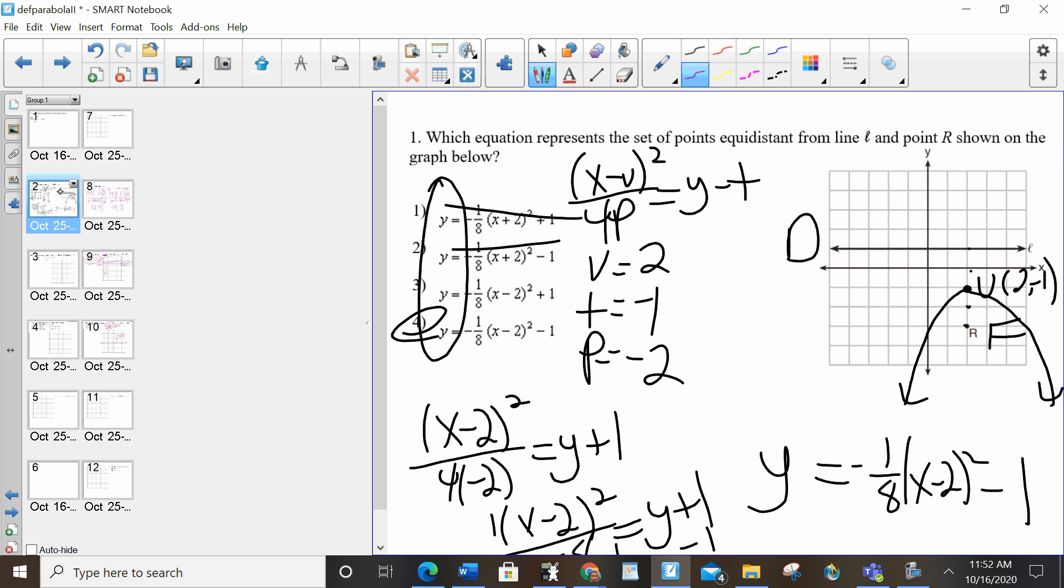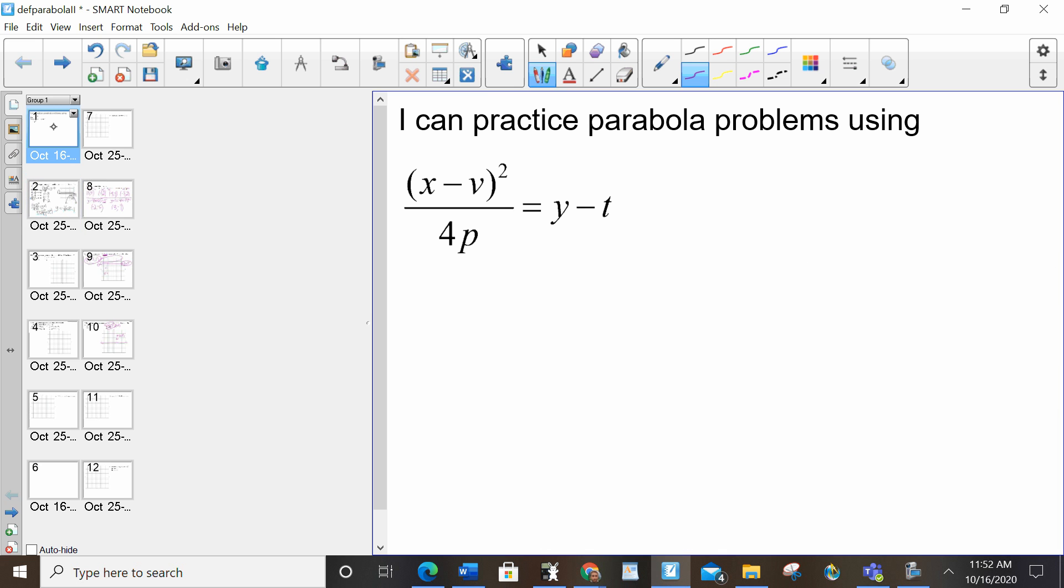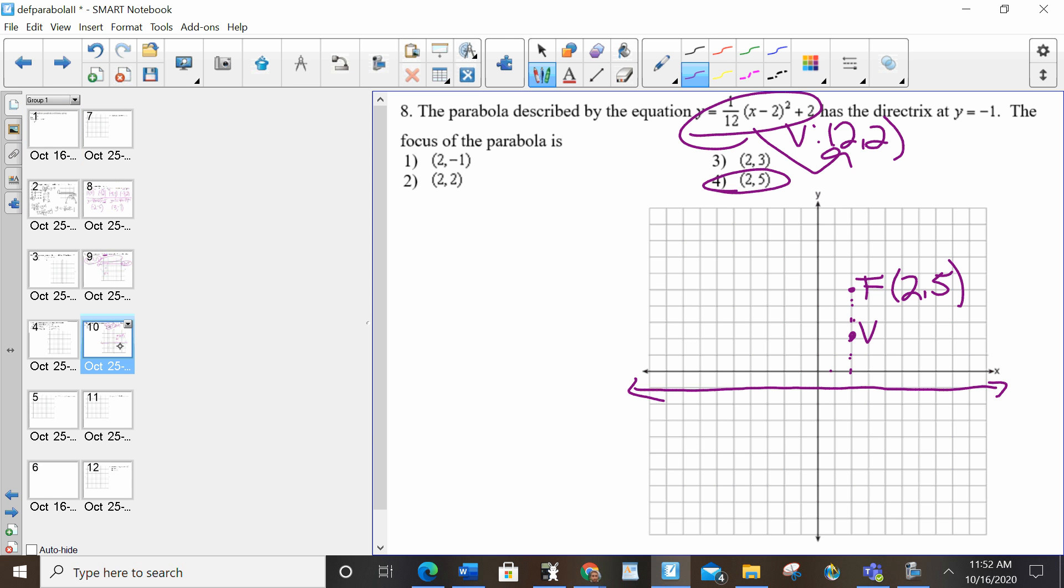Again, if it's multiple choice and y is by itself, you could always type it in and kind of match it up once you have your sketch. To write the equation of parabola, x minus b squared over 4p equals y minus t. Make sure the vertex is always in between the other two. And if they give you the equation, you're going to have to pull the vertex from there by negating the x value and not negating the y.